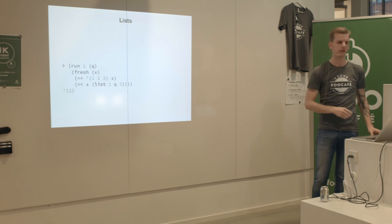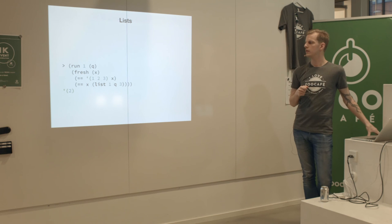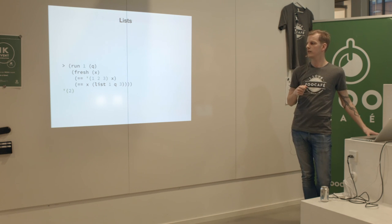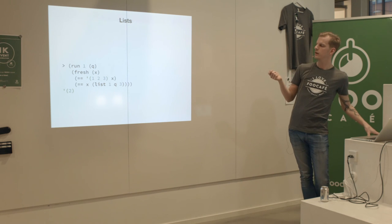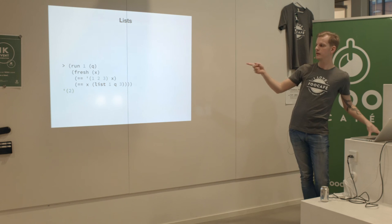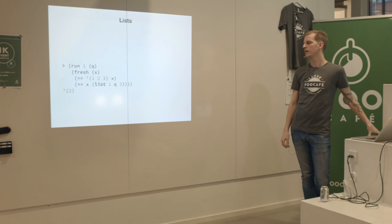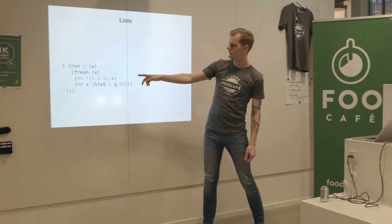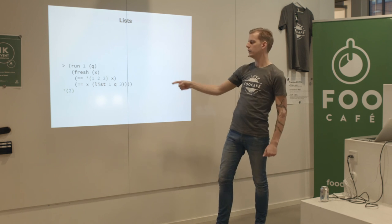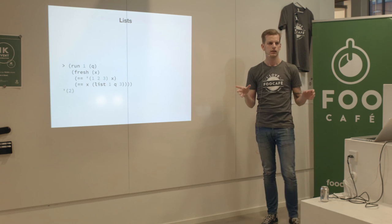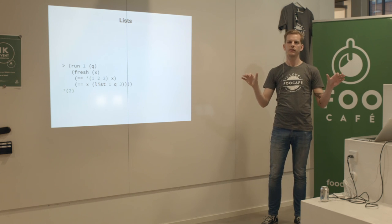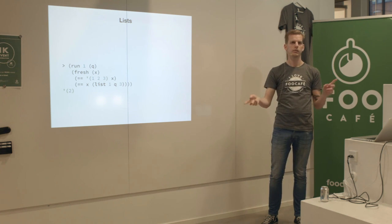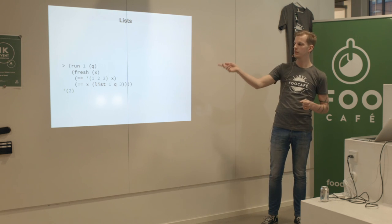You can use Scheme lists when unifying. We unify X with a list containing 1, 2, 3. Then we unify X again with another list using syntax for a list with 1, Q, and 3. As X is already the list 1, 2, 3, and we unify it with 1, Q, 3, MiniKanren will recursively match those corresponding parts. So Q will be 2 in this case.